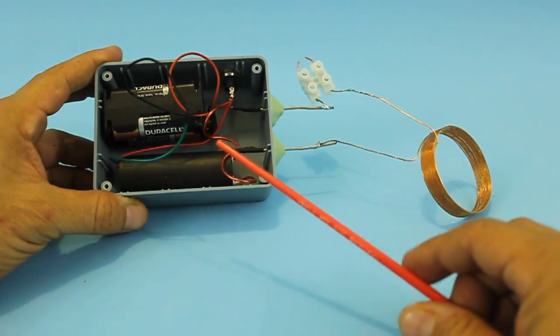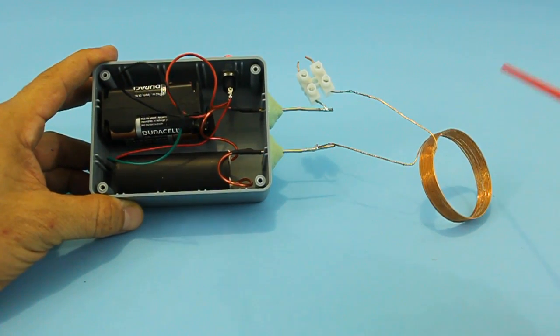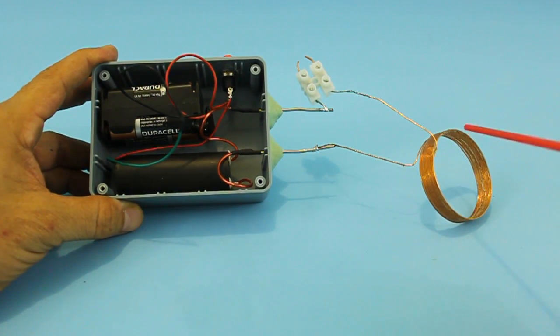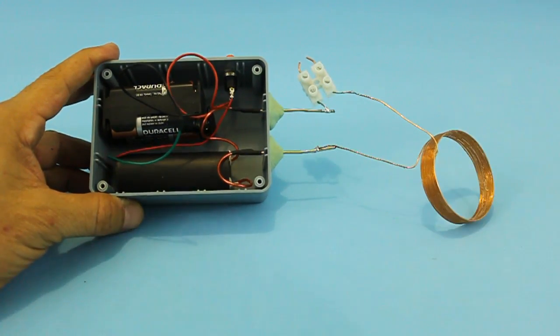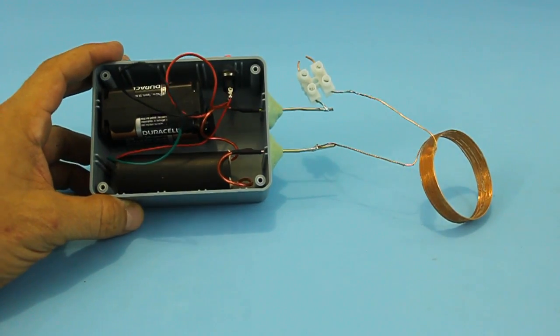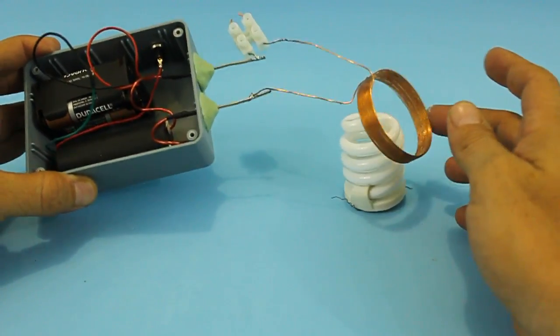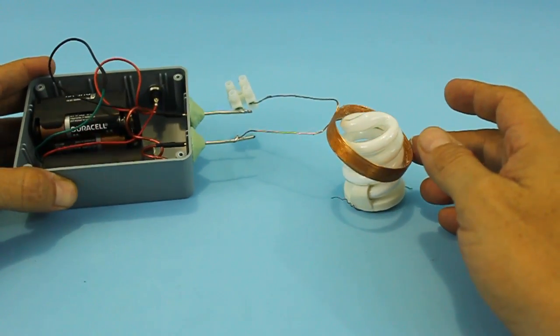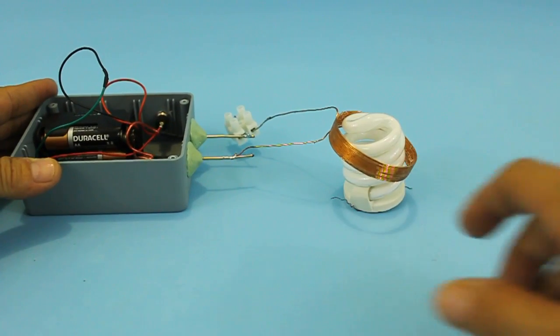In order to use it as an electromagnetic pulse generator, we have to connect the coil to the high voltage output but using the spark gap in series. Now to test if it is working, I am going to put this fluorescent lamp and see if the electromagnetic field has some effect on it.